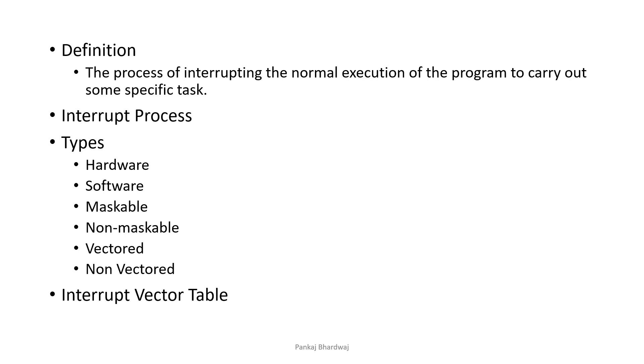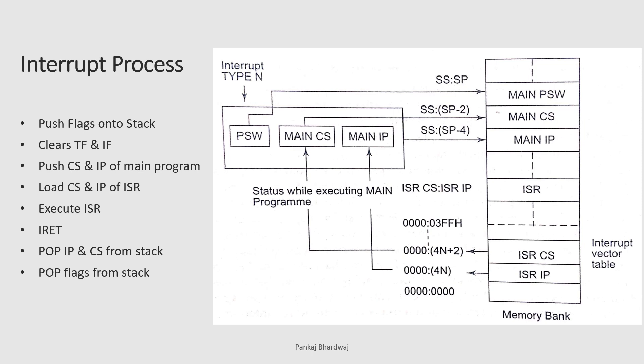When an interrupt is generated by any external device or due to some instruction by the programmer, the very first thing the microprocessor does is push the flags — or in other words, the program status word, which contains the accumulator as well as flags — onto the stack. The second thing is that it clears the trap flag and interrupt flag, because no other interrupt request can be handled while one interrupt is being processed.